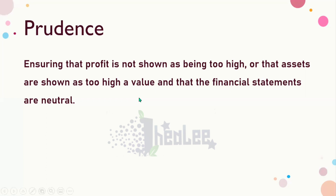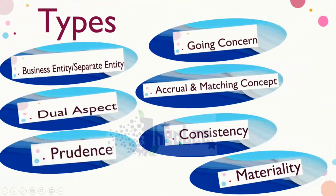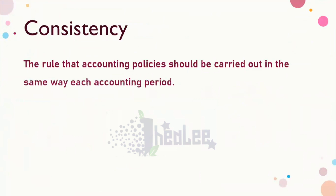Next is the consistency concept — the rule that accounting policies should be carried out in the same way each period. When a business has fixed a method for the accounting treatment of an item, it will enter all similar items in exactly the same way when preparing financial statements in following years. For example, if the straight line method was used to depreciate motor vehicles last year, you are expected under the consistency concept to use that same straight line method this year and going forward.